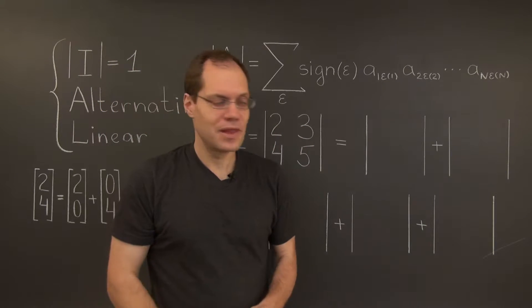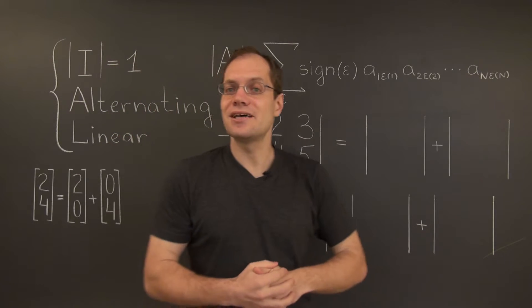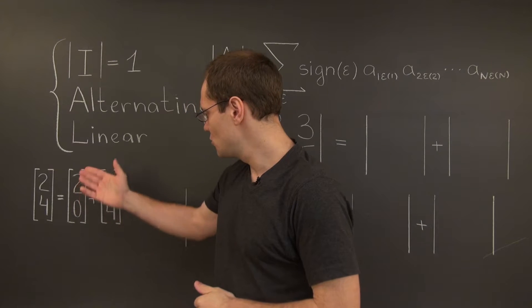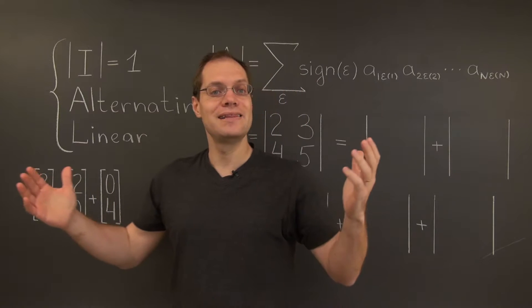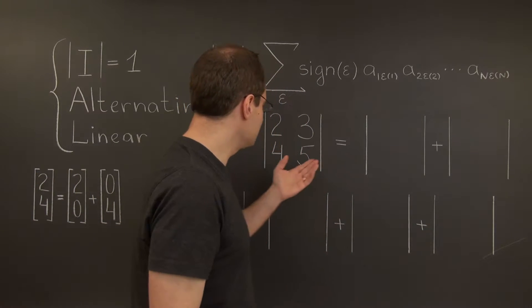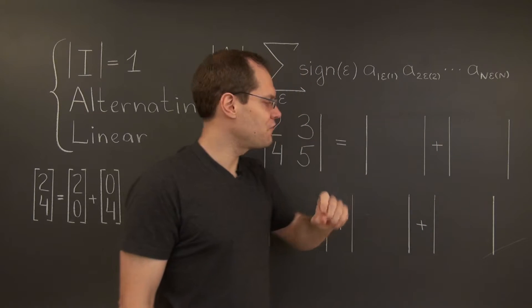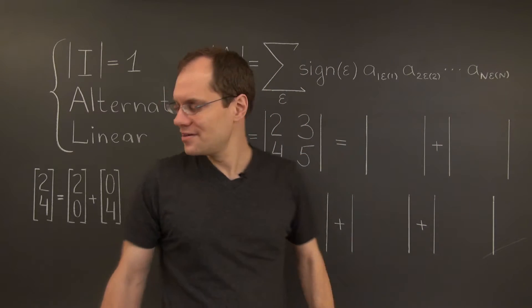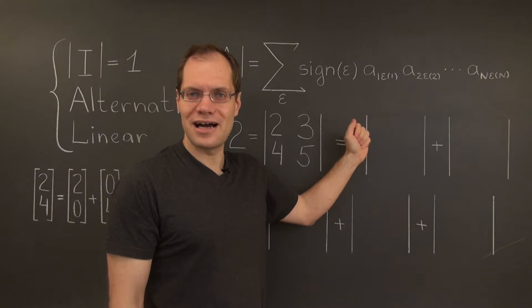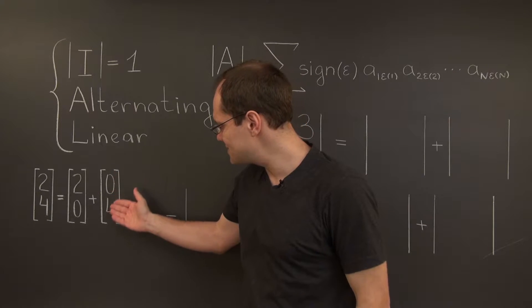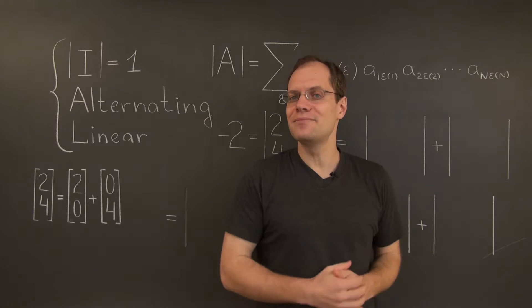Now I will think of its first column, because I want to use the linear property, as a sum of two vectors: (2, 0) and (0, 4). By the linear property, this determinant can be represented as the sum of two determinants, where in the first one we have the first vector for the first column and the other column is the same, and in the second determinant we have the second vector in the first column and the other column is the same.